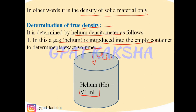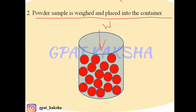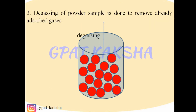The powder sample of which you want to determine the true density is weighed — suppose W amount of powder — and placed into the container. Then degassing of the powder sample is done to remove already adsorbed gases, so that the exact true volume can be determined.